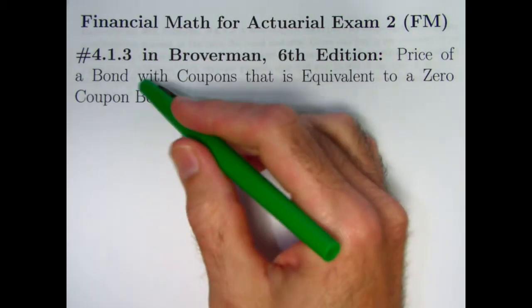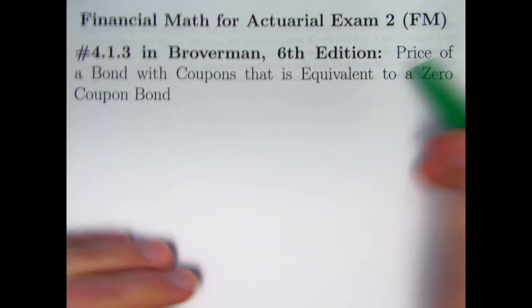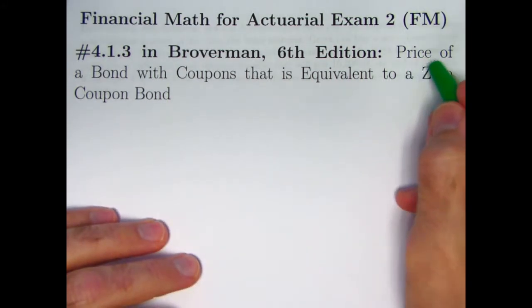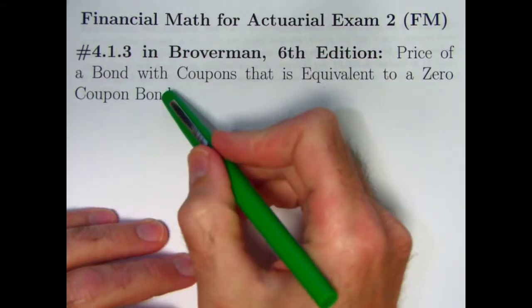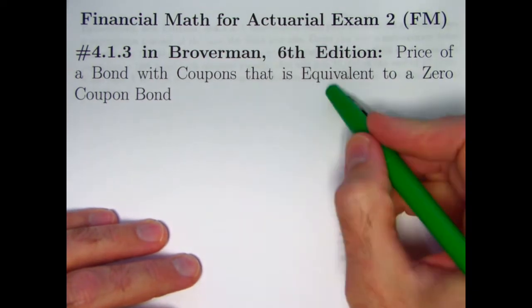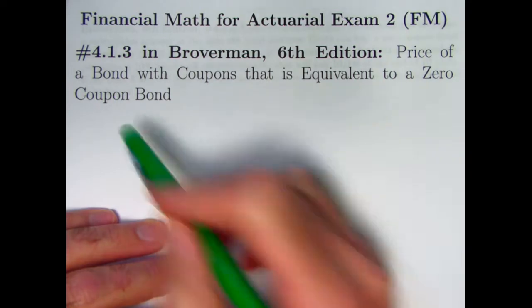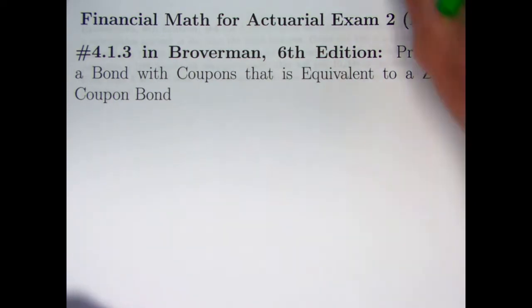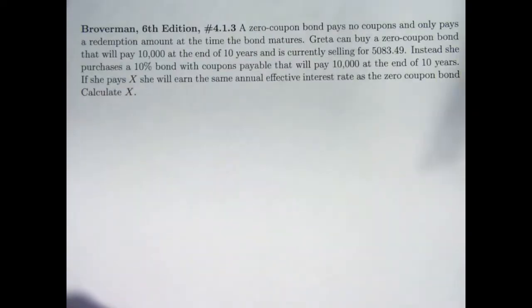In this video, I solve problem 4.1.3, a bond problem. We're going to be finding the price of what you have to pay for a bond that's got coupons like most bonds do. This bond happens to be equivalent to another bond that's sort of atypical. It's a zero-coupon bond where you only get your redemption value at the end when it matures.